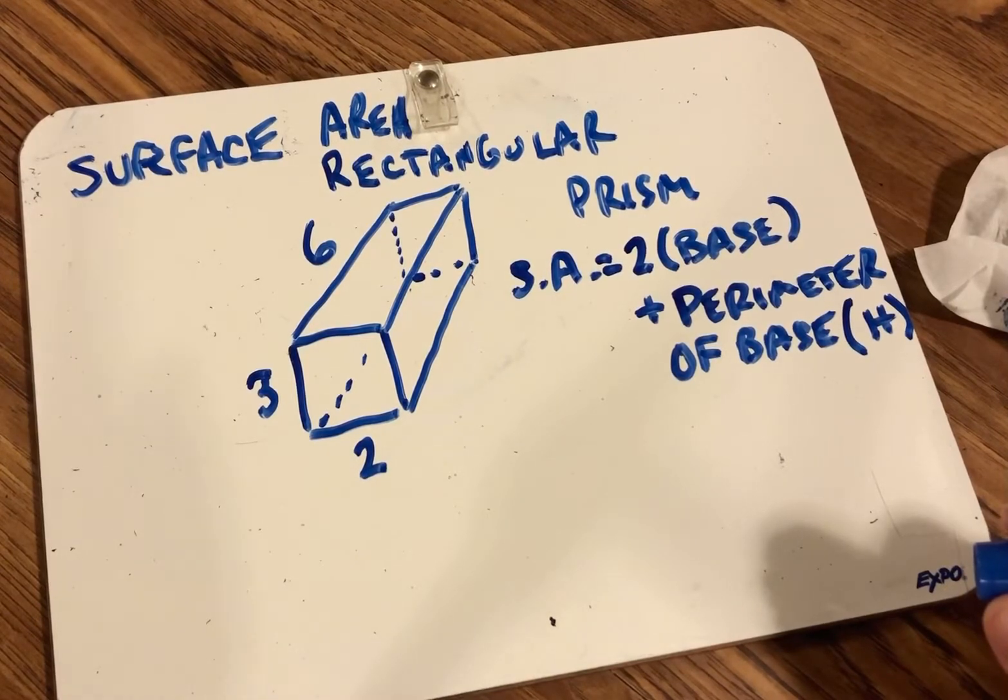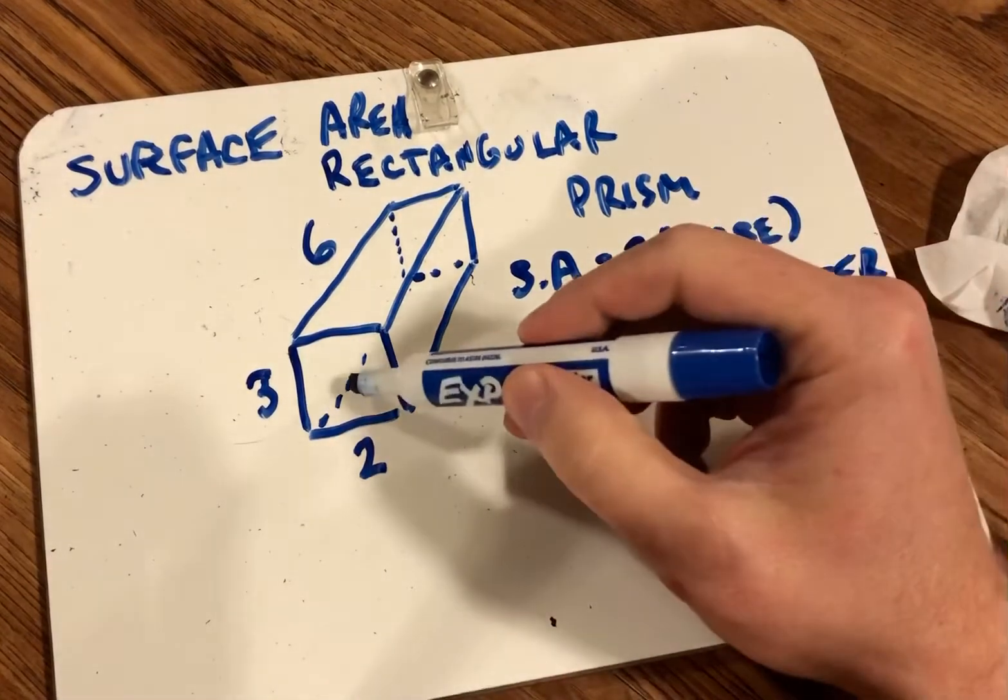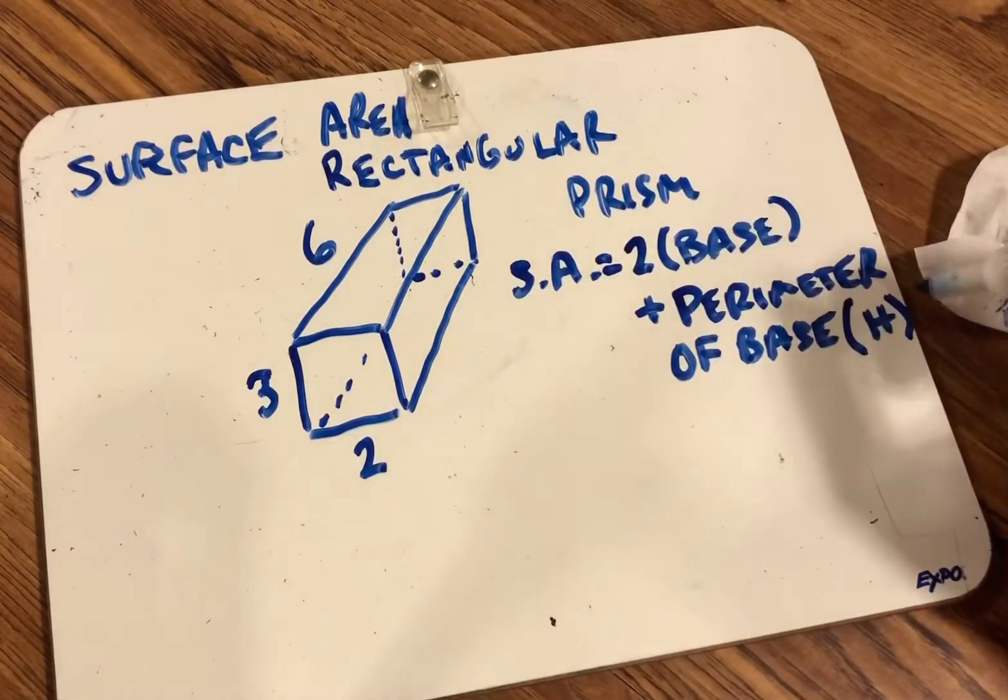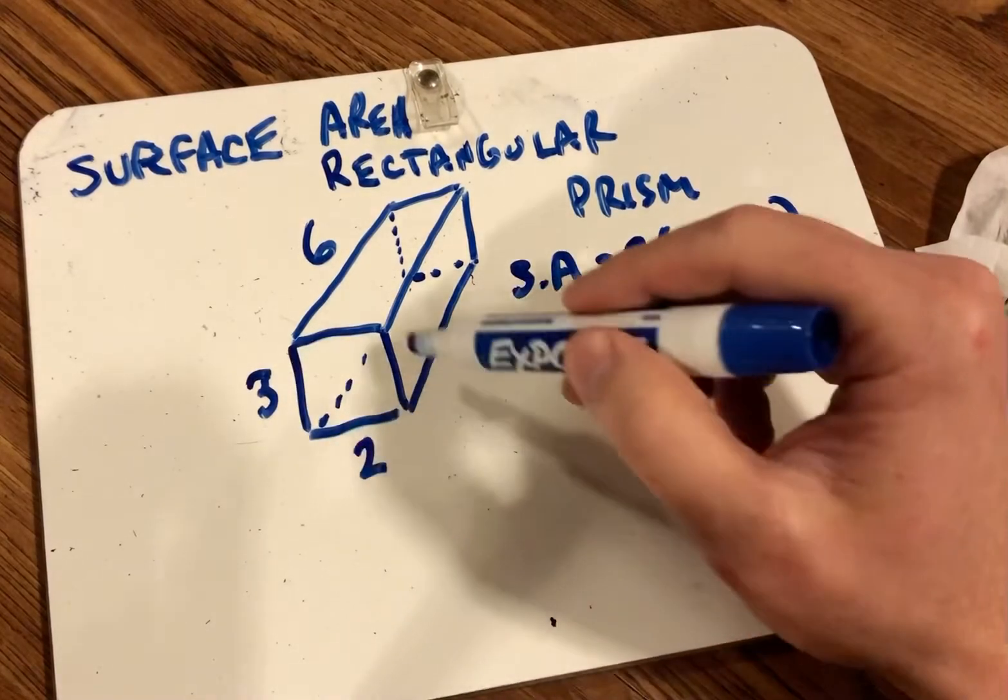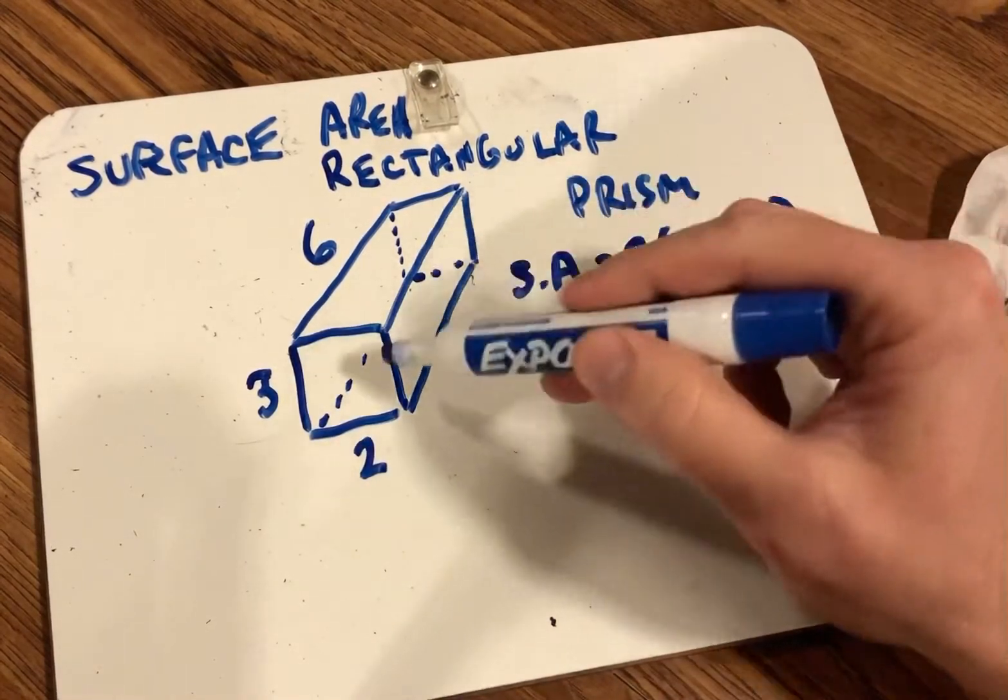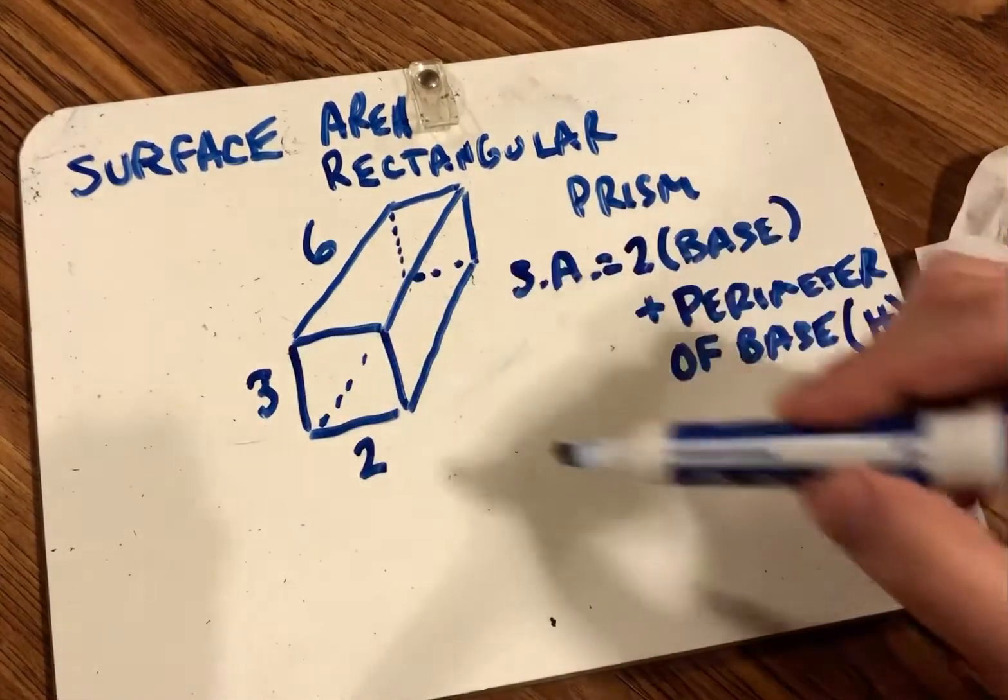Remember, surface area, we're going to take two times the base, because we have two bases, the front and the back, and then we're going to add that to the perimeter of the base times the height, that lateral surface area of the figure.